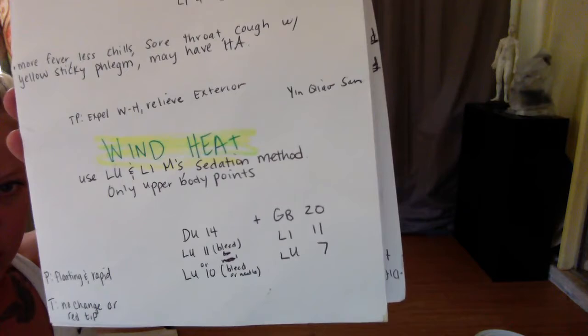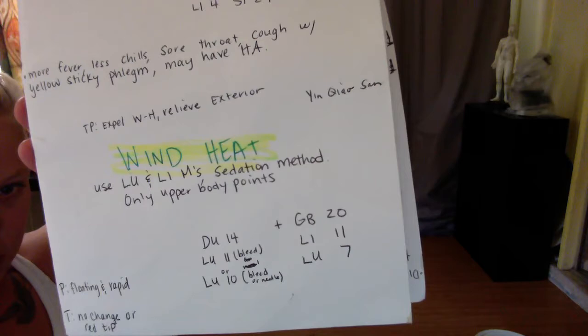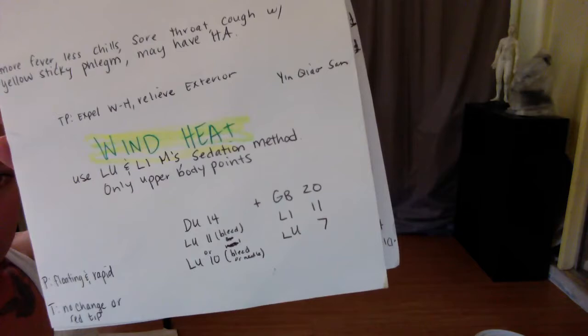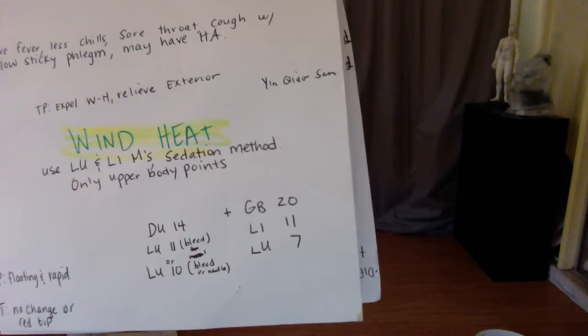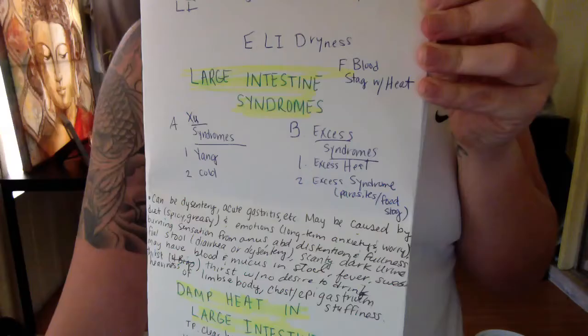Wind heat points combination: Dew 14, lung 11 or lung 10. You can bleed or needle them for the sore throat. Also add gallbladder 20, LI 11, and lung 7.